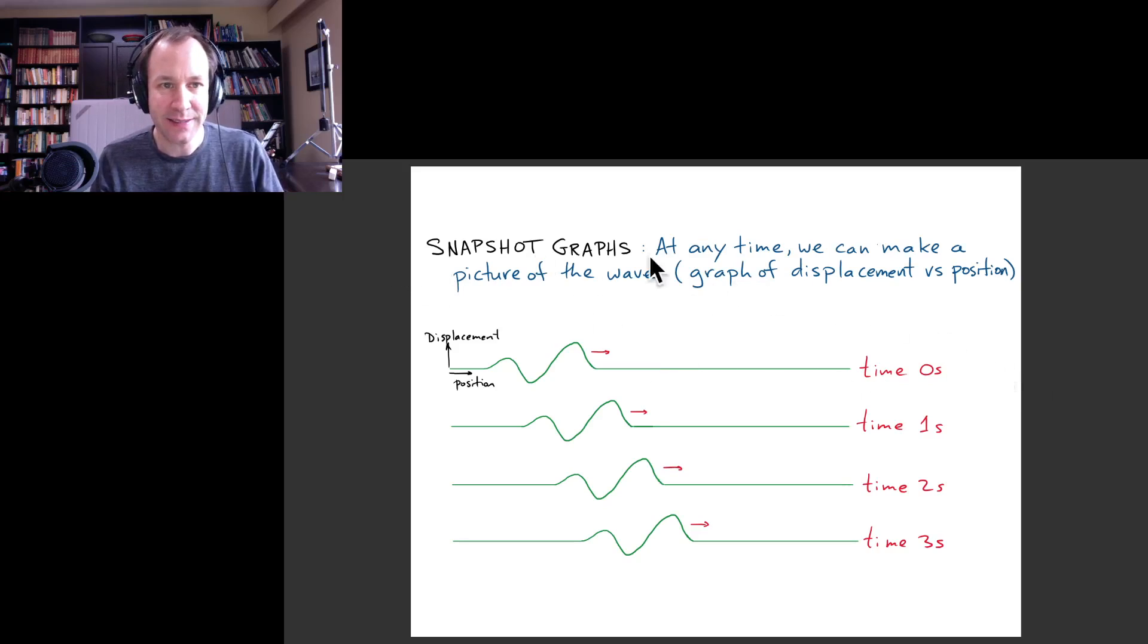This is the idea of the snapshot graph, as I explained. I've indicated here four different snapshot graphs for four different times, and this is for a wave pulse which is traveling to the right.